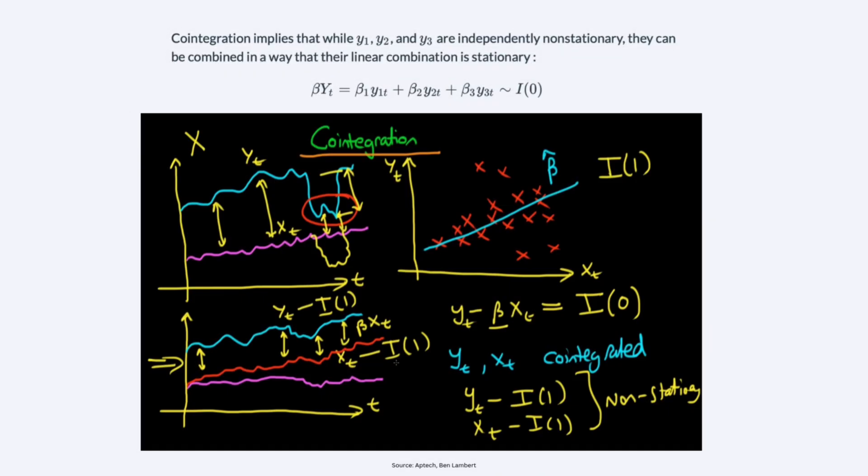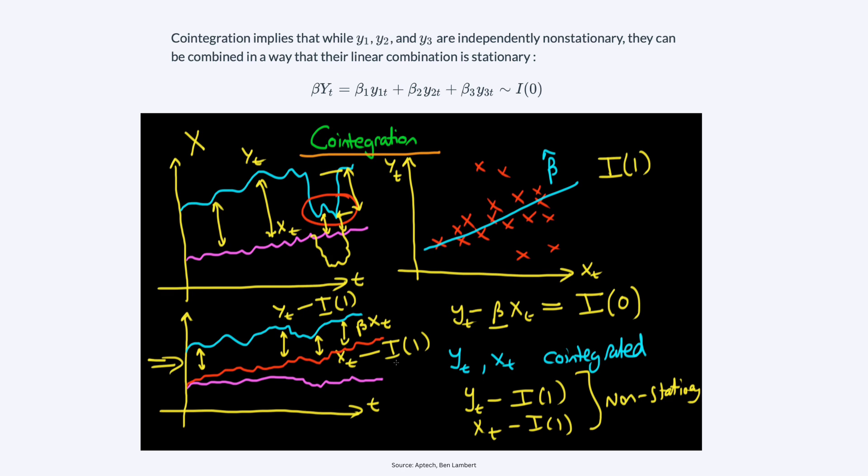The third common model in this category is co-integration — a statistical property that indicates a long-term equilibrium relationship between two or more non-stationary time series variables. When you go deep into these models, you'll learn all the processes and nomenclature like stationarity and non-stationarity. Even if individual series are non-stationary, their linear combination can be stationary, implying a stable relationship over time.